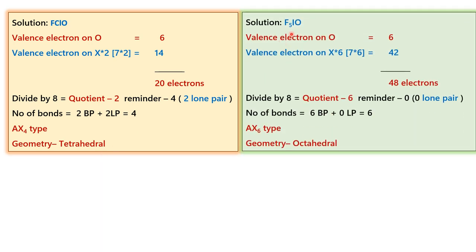Similarly, for F5IO, we have taken the valence electron count and it adds up to 48. When you divide it by 8, you get only a quotient and a 0 as a remainder. So the total number of bonds for this particular molecule is 6. It is of the AX6 type. And so the parent geometry is octahedral.